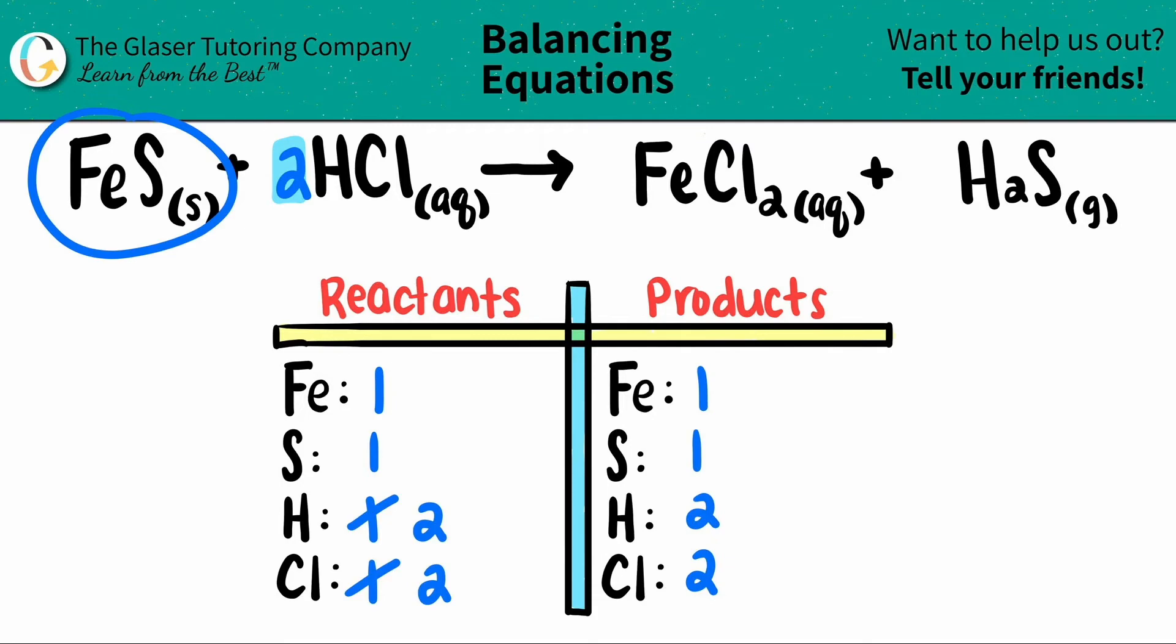The balanced equation is one FeS plus two HCls, which will yield one FeCl2 plus one H2S. And that's it.